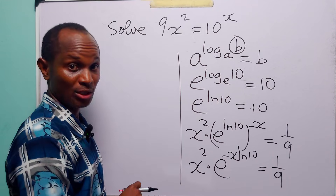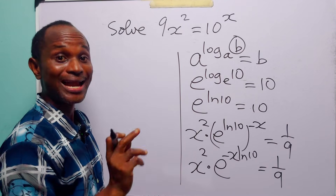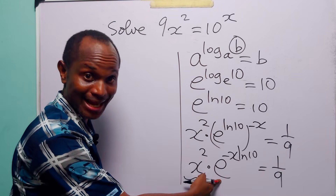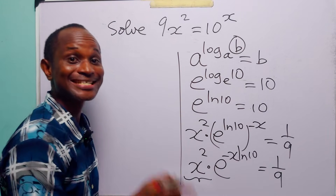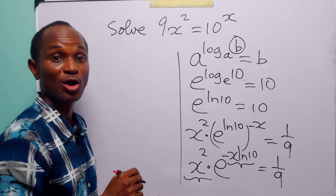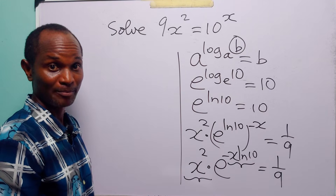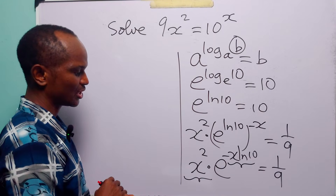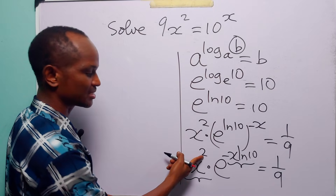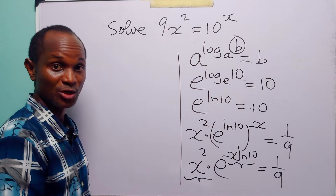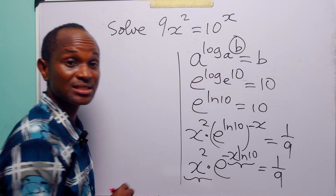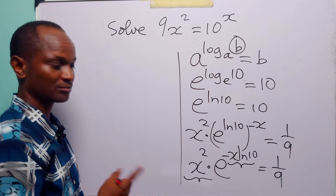From this point on, our aim is to make sure that what we have before the Euler number is exactly the same thing that we have as the exponent of the Euler number. The first thing we are going to do to achieve that is to get rid of this squared. We are going to take the square root of both sides of this equation.